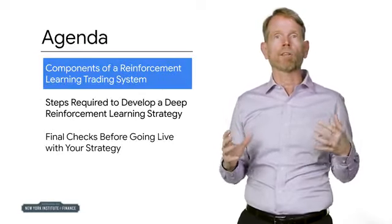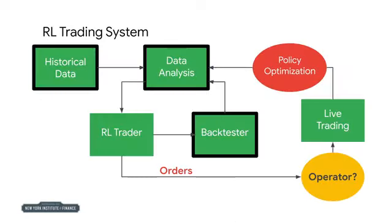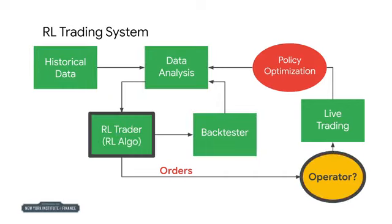To begin, we'll talk about the main components of an RL trading system. An RL trading system is very similar to other quantitative systems. Once it has been successfully trained and backtested on historical data, it is ready to be paper traded and potentially go live. The RL trader, whose command center is the RL algorithm, receives data on the current market state and acts on it by either placing a trading order or doing nothing.